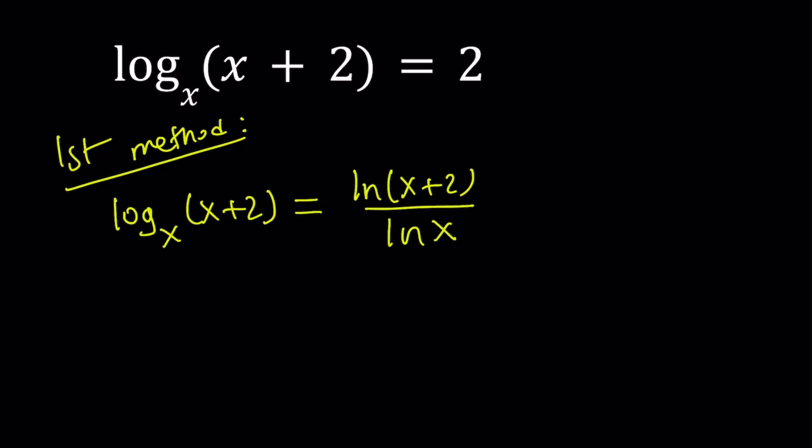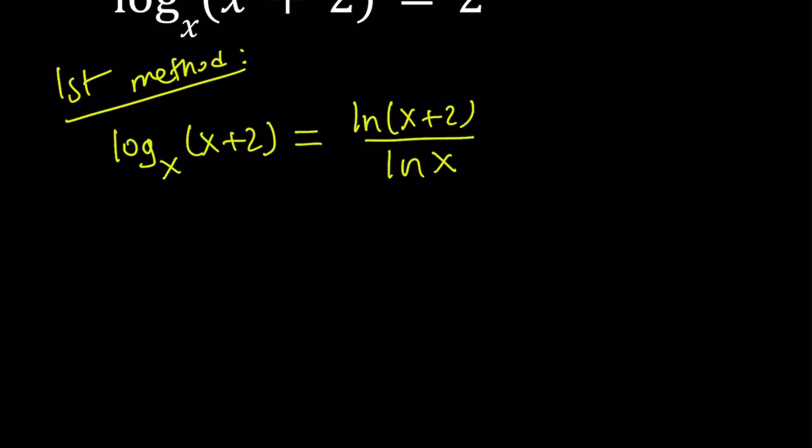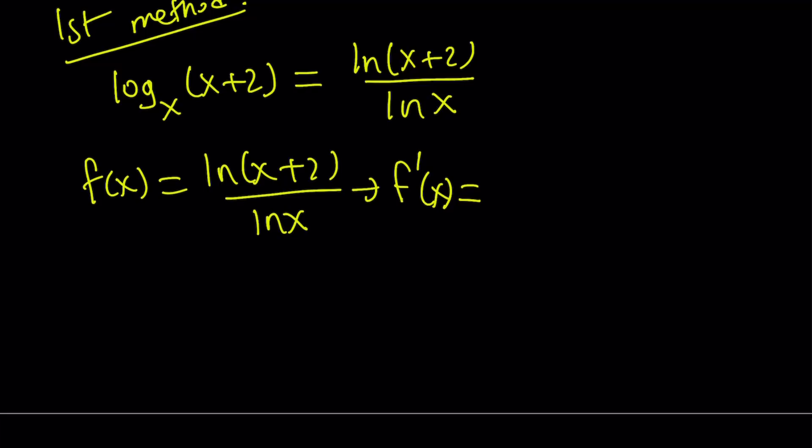So, we're going to write this as ln of x plus 2 divided by ln x. Great. This is called the change of base formula, and it can easily be proven using the definition of logarithms. The definition of logarithms is very important. So, suppose our function f of x is ln of x plus 2 divided by ln x. Now, I'm going to differentiate this function by using the quotient rule.